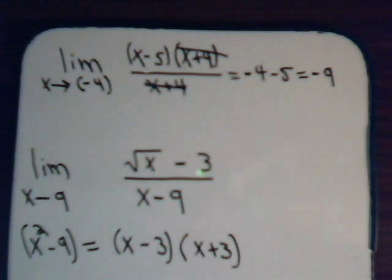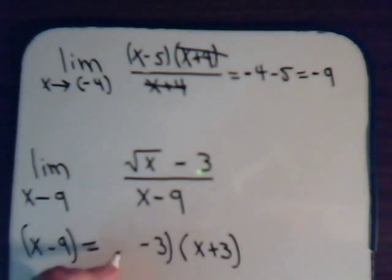But we don't have x squared minus 9. We have x minus 9. But we can still write this. We can still write that as the difference of two squares just by using square roots.